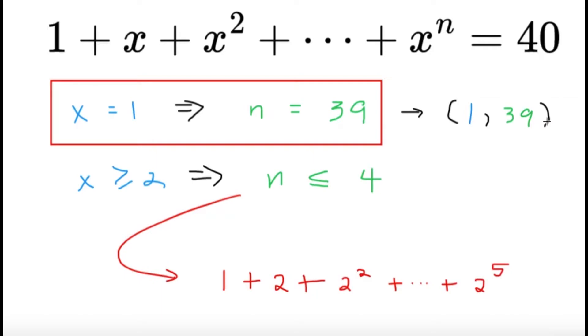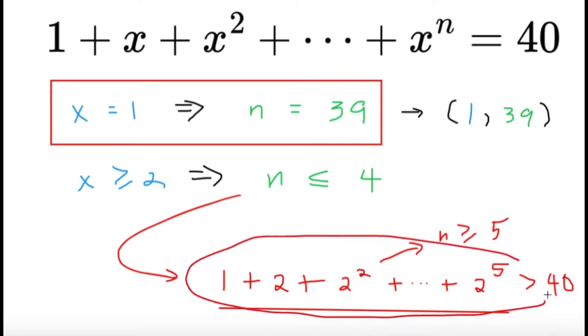Since x is greater than or equal to 2 now, we might want to try to see 1 plus 2 plus 2 squared plus so on and so forth. And if n is greater than or equal to 5, then the left-hand side should be at least this value over here. But this value, if you evaluate this, that's going to be equal to 63. And that's already greater than 40, which is greater than the right-hand side. So while n is greater than or equal to 5, that's already impossible. So we should have n is less than or equal to 4.